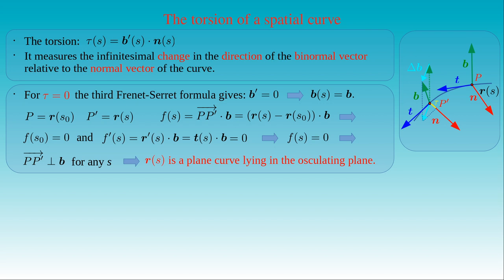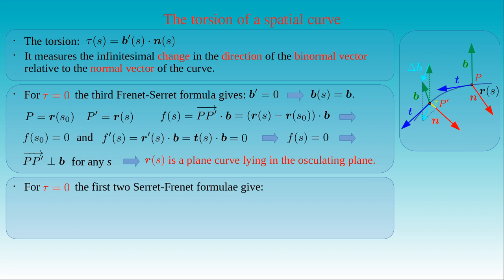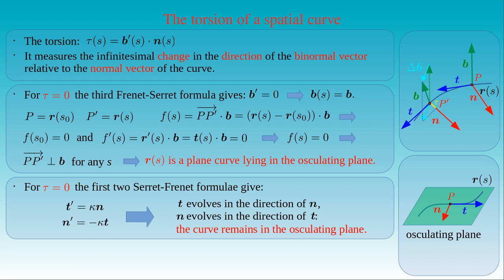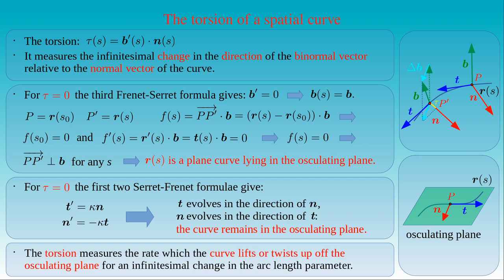Now we can check what the first two Frenet-Serret formulae give if the function tau vanishes. The first formula states that the derivative of T equals kappa times N, so it does not depend on tau. The second formula reduces to the derivative of N equals minus kappa times T. These two equations tell us that T evolves in the direction of N, and N evolves in the direction of T as we move along the curve. Since T and N span the osculating plane, these evolution equations show that the curve remains in the osculating plane determined at the original point P at arc length s0. We have thus demonstrated that the torsion tau measures the rate at which the curve twists up off the osculating plane for an infinitesimal change in the arc length.